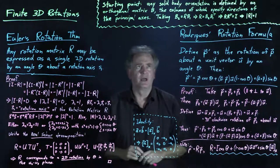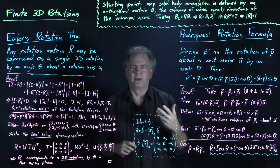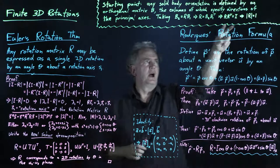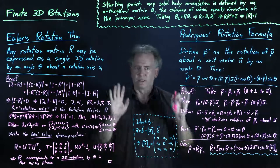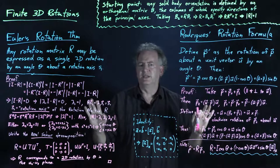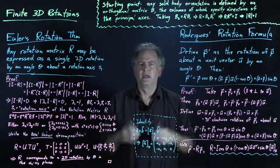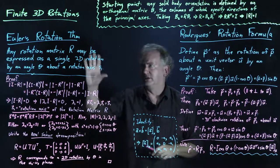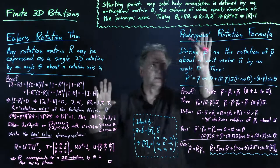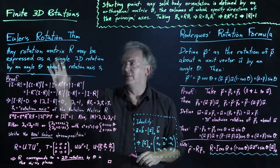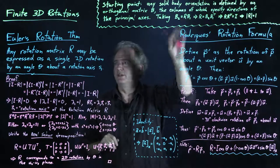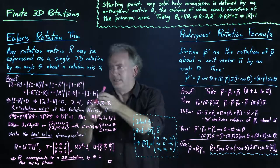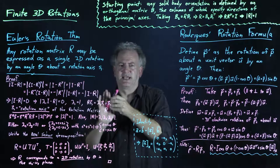So from here, the basic notion of a rotation corresponds to a 3×3 orthogonal matrix R, called the rotation matrix — it's orthogonal and its determinant equals 1. We're going to consider a theorem and a useful formula, and then look at various ways of interpreting R. The starting point is Euler's rotation theorem, which states that any rotation matrix R may be expressed as a single simple 2D rotation by some angle θ about some rotation axis S1.